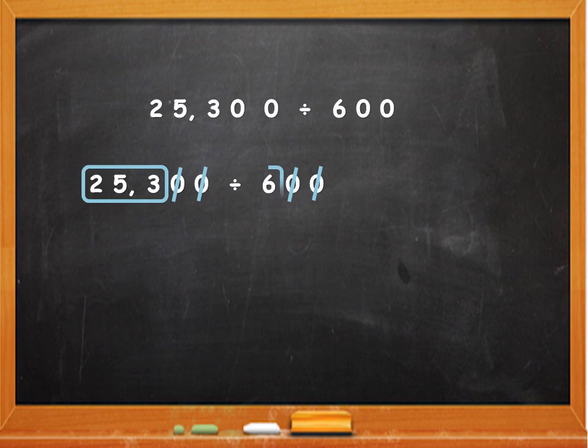253 divided by 6 equal to, 2 is less than 6 so we can't divide. What will we do? Divide 25 by 6. 6 will go 4 times. 6 4s are 24 which means the remainder is 1. Now, divide 13 by 6. 6 will go 2 times.